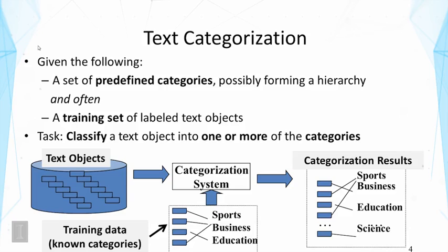We often assume the availability of training examples — documents tagged with known categories. These examples are very important for helping the system learn patterns in different categories, and this further helps the system recognize categories of new text objects it has not seen.